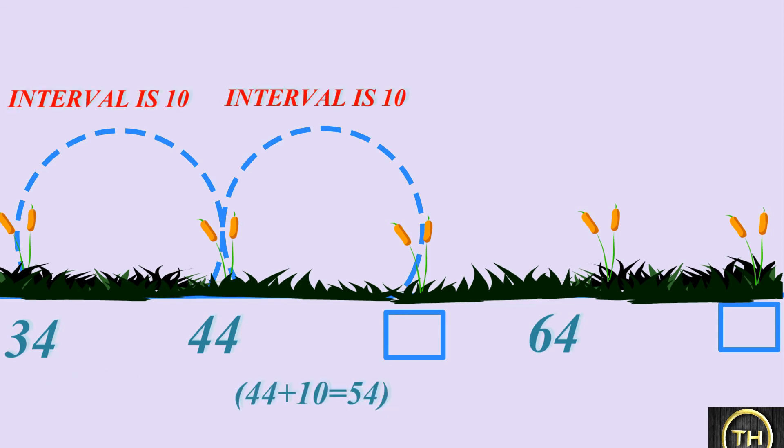So, the next number will be 44 plus 10 which is 54. The number after 54 will be 54 plus 10, which is 64. The last number will be 64 plus 10, which is 74.